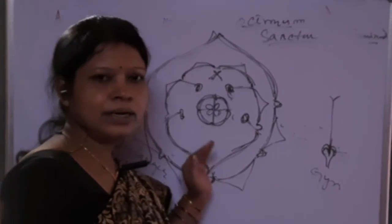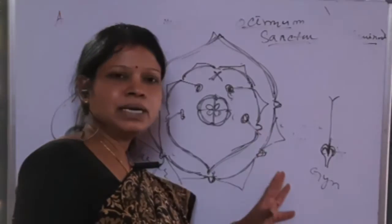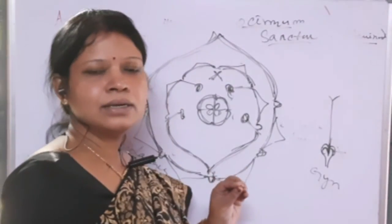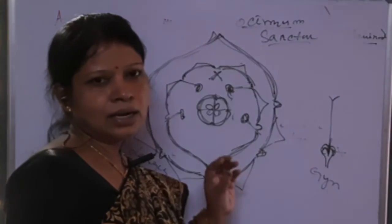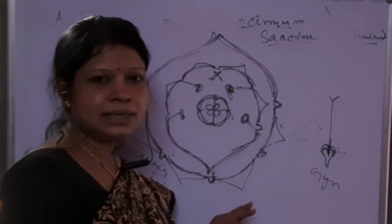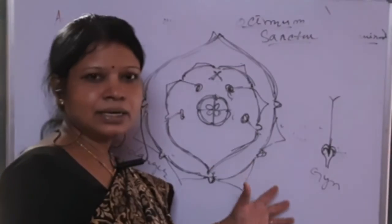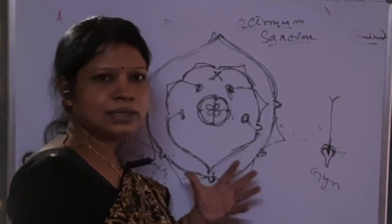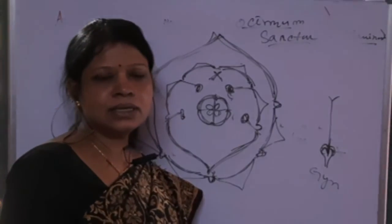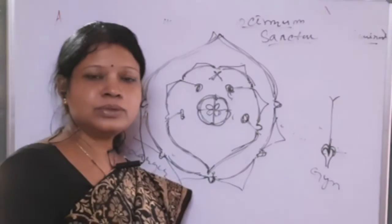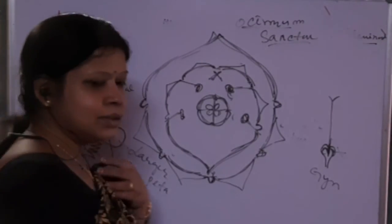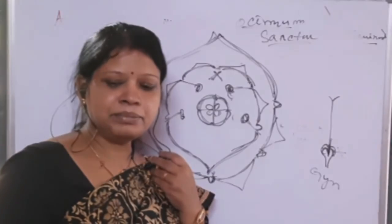The important plants of this family include tulsi (which has traditional value), thyme, rosemary, mint, and salvia. All these plants have medicinal value and are important herbal plants used for their medicinal properties. This concludes the study of family Lamiaceae.